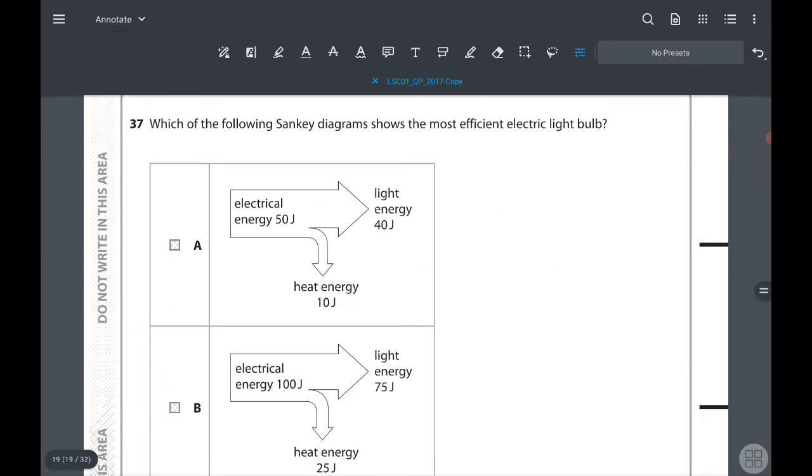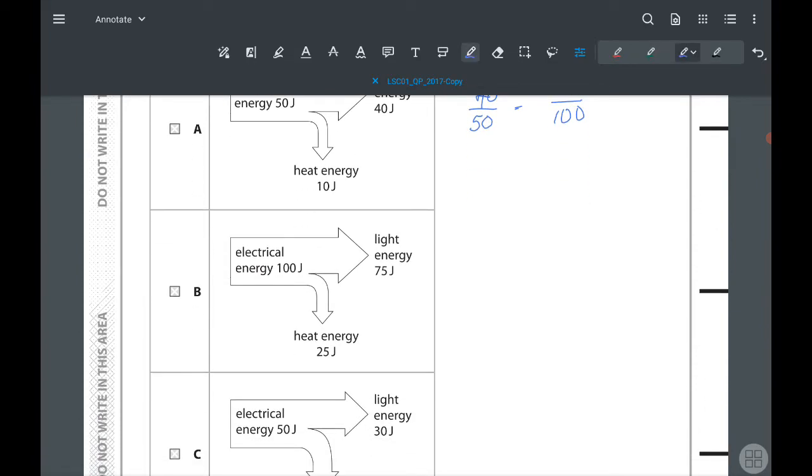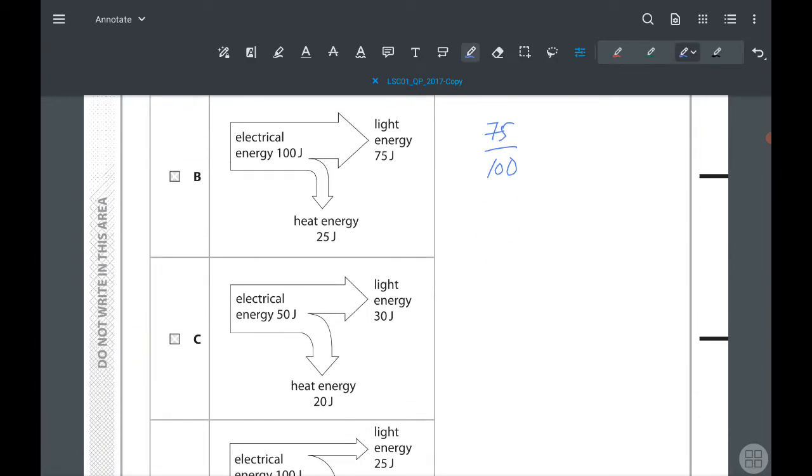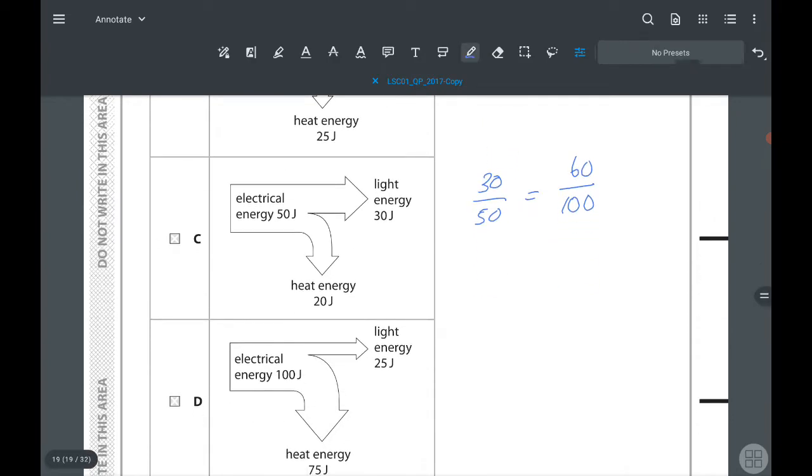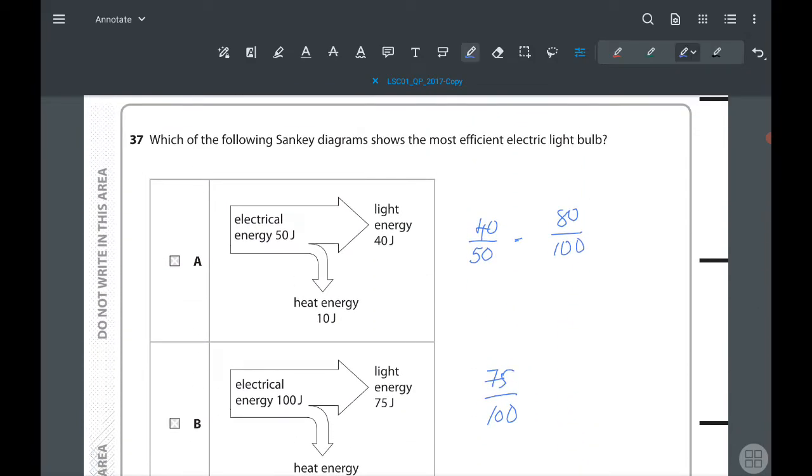37th question: which of the following Sankey diagram shows the most efficient electrical bulb? If something is efficient, that means out of the input energy, most of it will be used for the required purpose. So here it is a light bulb, so the purpose will be giving light energy. We need to have a bigger proportion of light energy given. So I will take a proportion and show you. 50 out of 40 will be 80%. Here they have given 75%. They have given 30 out of 50, that means 60 out of 100. And in this one, 25 out of 100. So the most efficient one will be A.